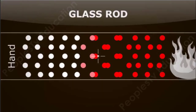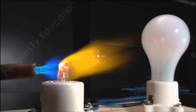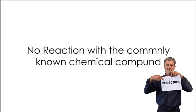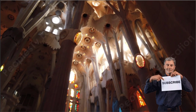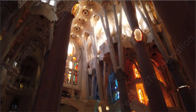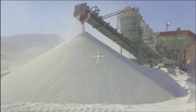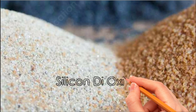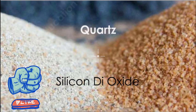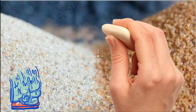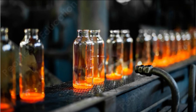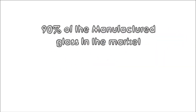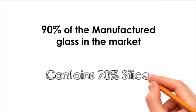In terms of conductivity, glass has neither thermal nor electrical conductivity, since it does not react with commonly known chemical compounds. The most familiar and historically oldest types of manufactured glass are silicate glasses, based on the chemical compound silica — commonly known as silicon dioxide or quartz — which is the primary constituent of sand. This type of glass accounts for around 90% of manufactured glass in the market, and it contains around 70% silica.